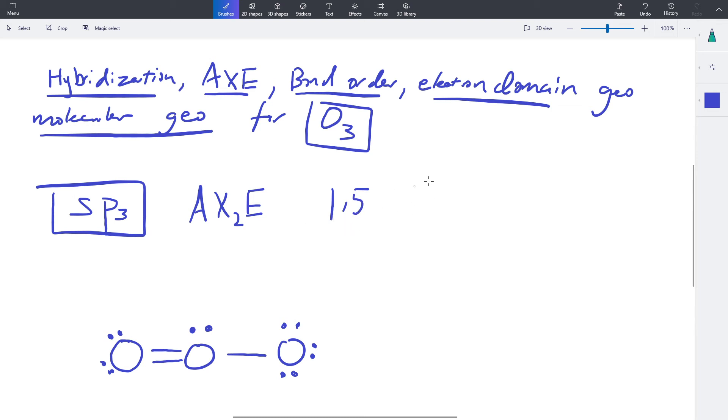So we would have kind of an average, right? One for the single bond plus two for the double bond over the total number of bonds that you can count. So that would be 1.5 or three over two, doesn't really matter. So bond order is 1.5. Alright, let's move on. Electron domain geometry.